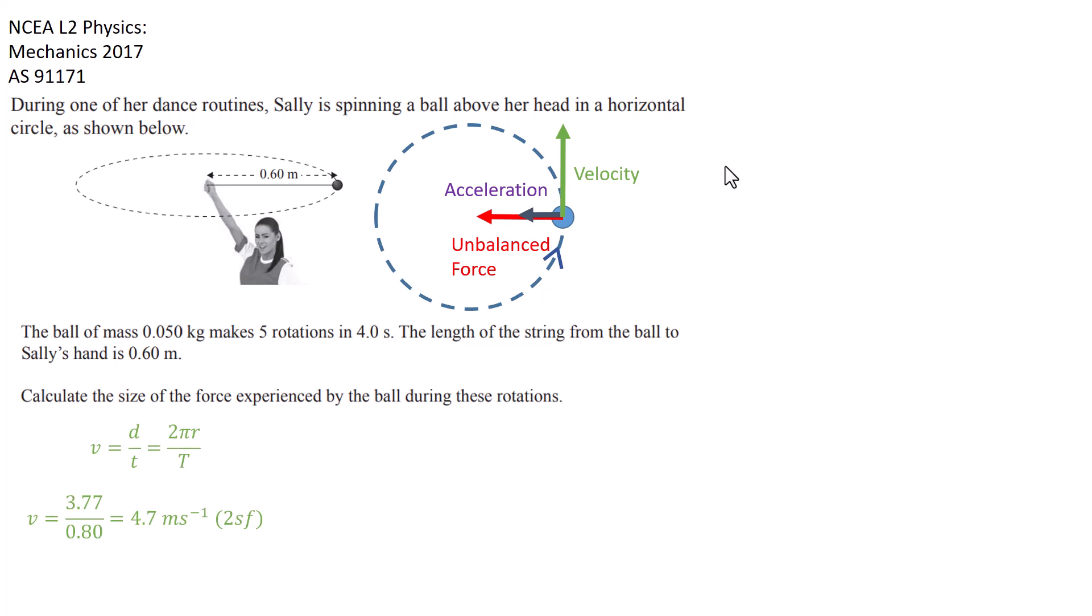Velocity equaling displacement over time gives us 2 pi times the radius—that's the circumference of the circle—divided by the period, the time taken to complete one full circle. The period here is five rotations in four seconds, so we divide four seconds by five to give us 0.8 seconds. 2 pi r comes out as 3.77, and that gives us a velocity of 4.7 meters per second to two significant figures.